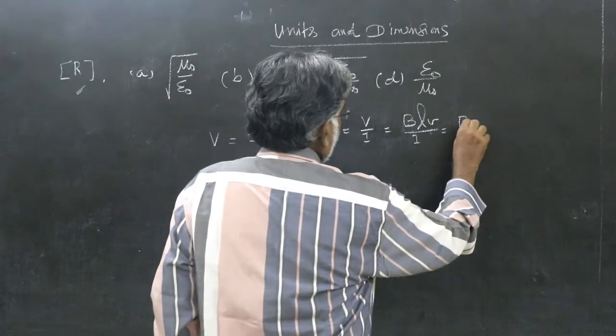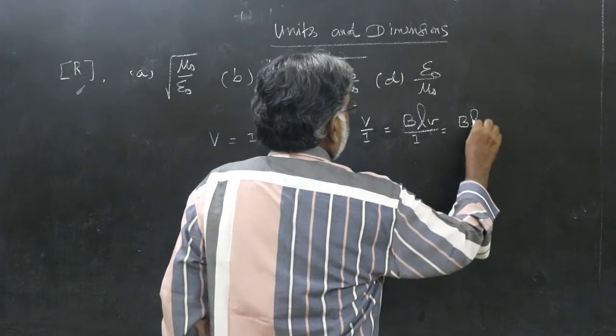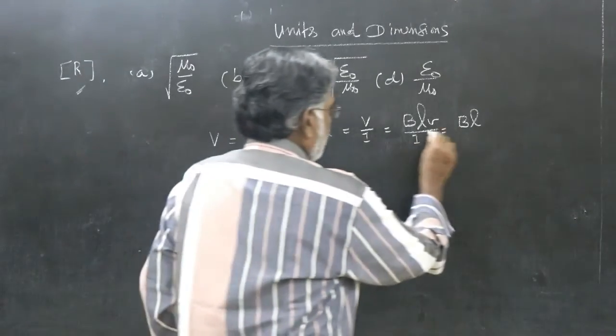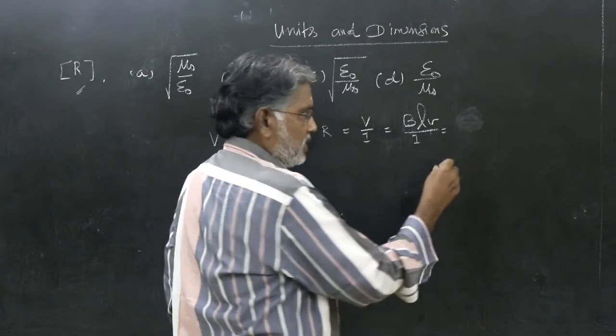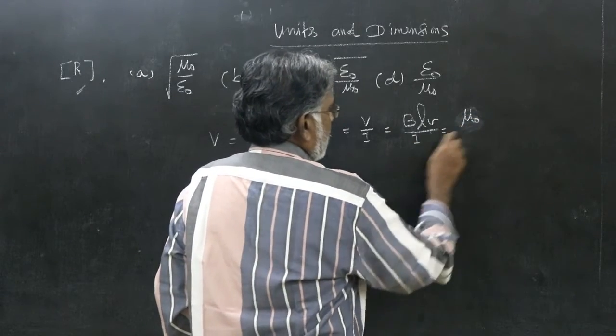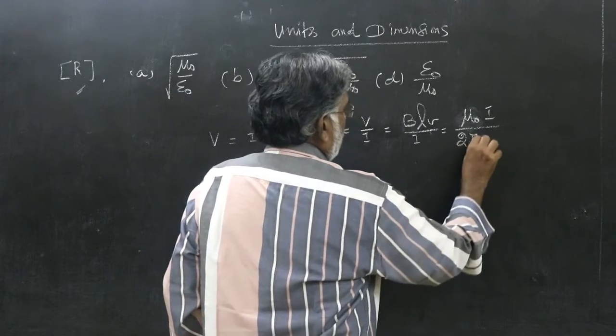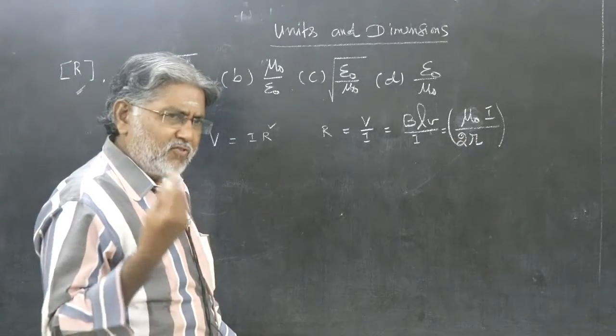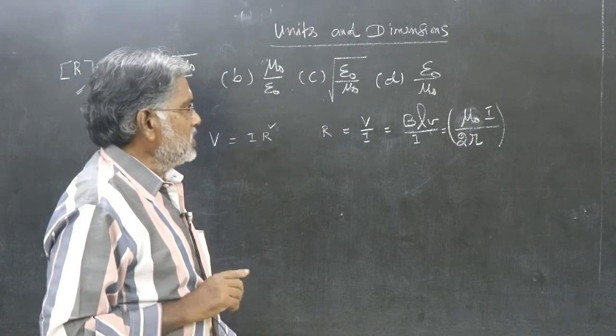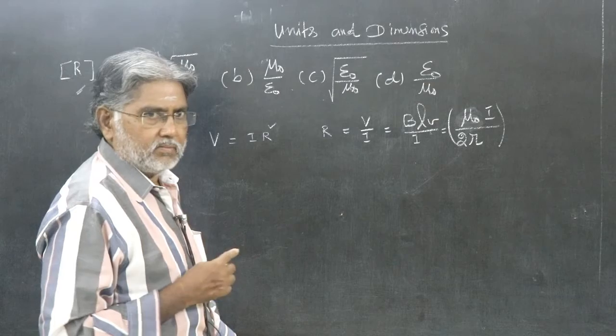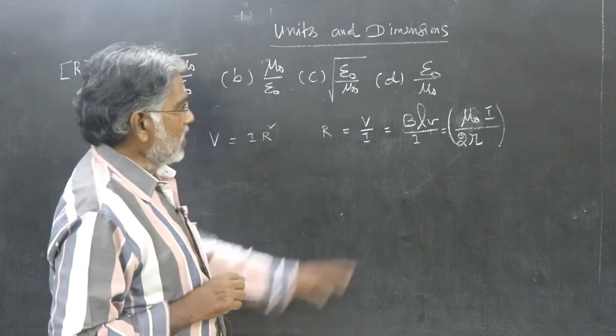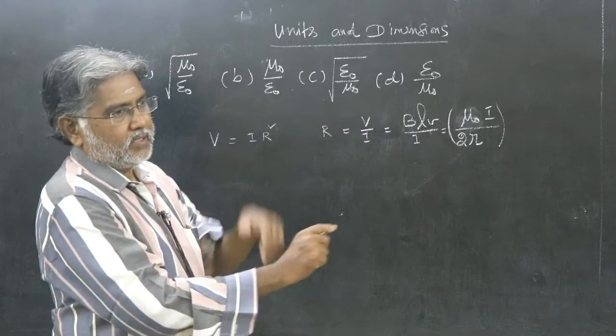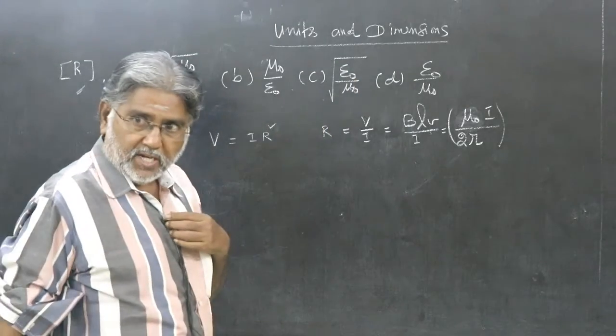So BL. Of course, you think of a simple formula for B. That will be easier. Mu naught, because there is I here, maybe I by 2R for B. It's only dimension, no? So use any formula. So dimension of B will be same as dimension of mu naught I by R. Dimension of. So for B, I am using this. Once again I repeat.